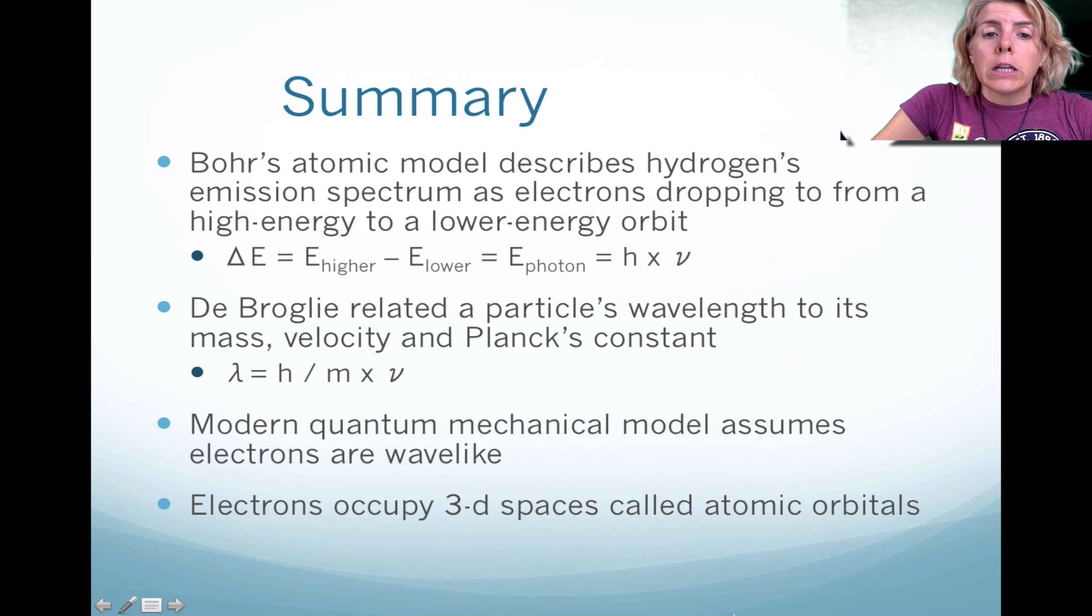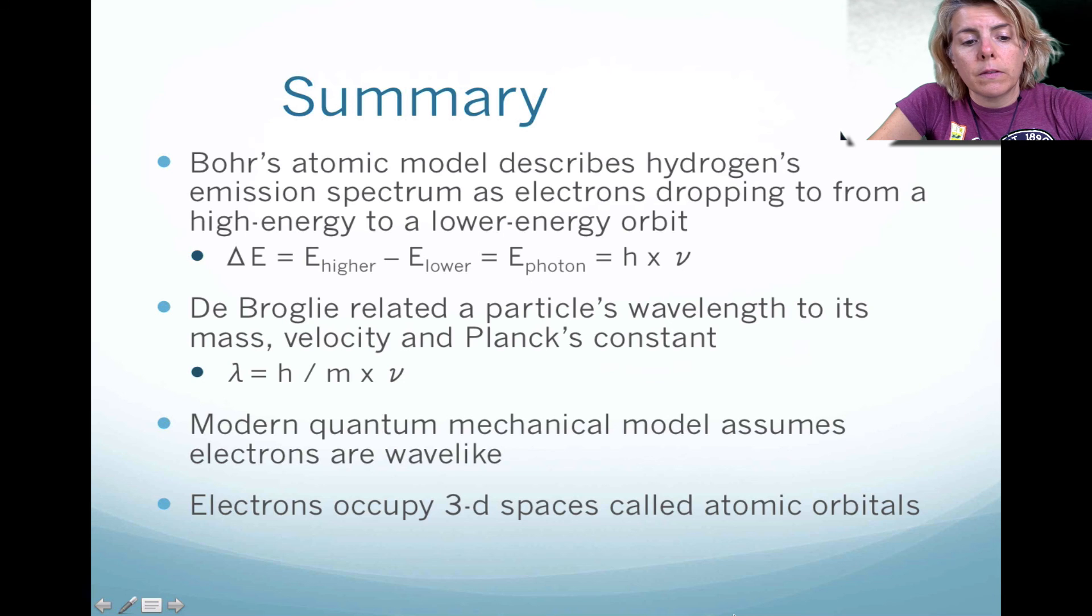Then de Broglie, he wanted to expand on Bohr's model, and he found that a particle's wavelength can be related to its mass times its velocity using Planck's constant, λ = h / m × v. And then the modern quantum mechanical model using de Broglie and Schrödinger describes the electron as having wave-like behavior. Now, the modern-day version of the atomic model shows that electrons actually do occupy 3D spaces called atomic orbitals, and we use probability to help locate those electrons.